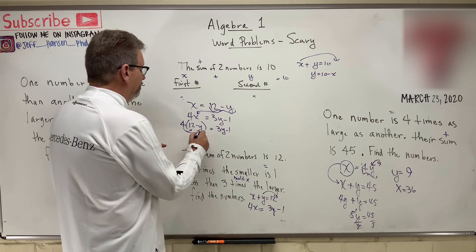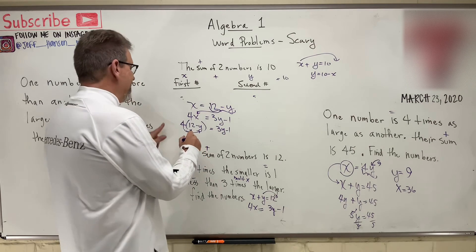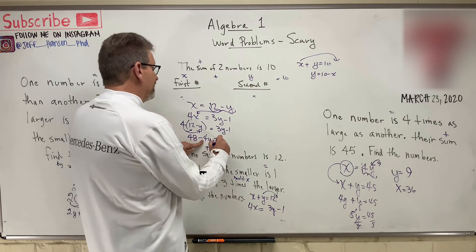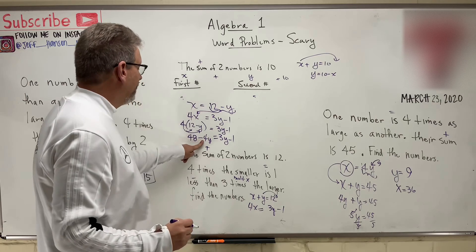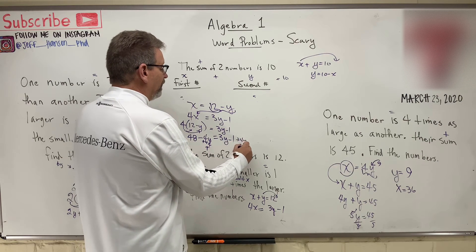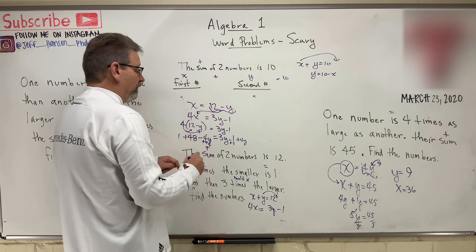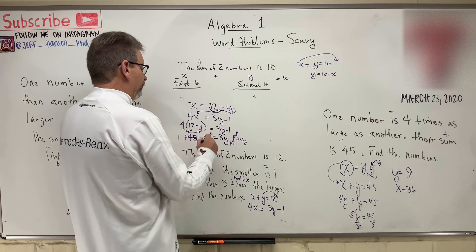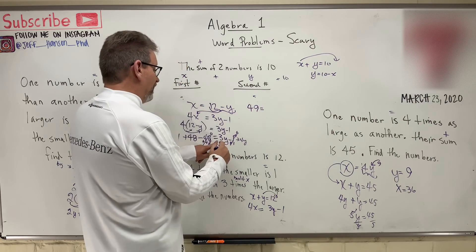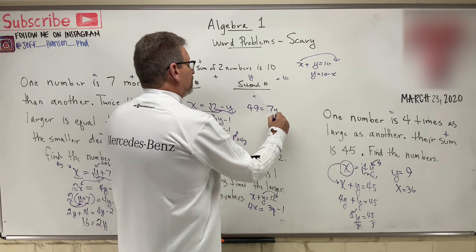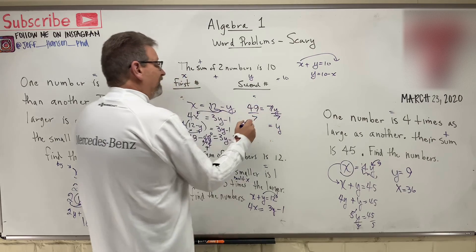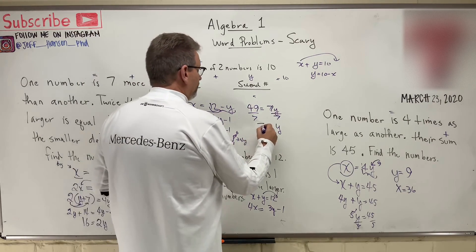We've got a distributive property here. Four times 12, that's 48, minus four Y. Four times a negative is a negative. It's equal to three Y minus one. How about we move the Y to the other side? So we'll add four Y over here, we'll add four Y over there, and we'll do two steps in one. We'll add one there and add one over here. So that thing goes to zero, that thing goes to zero. One plus 48 is 49, and what do we have on the other side? We have three Y plus four Y, which is seven Y, and then divide both sides by seven. Then Y is equal to 49 divided by seven. Hey, that's seven. So there's Y.